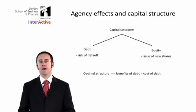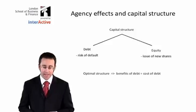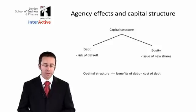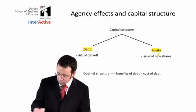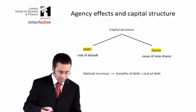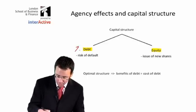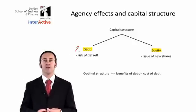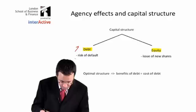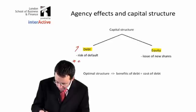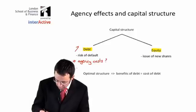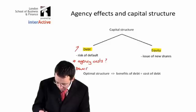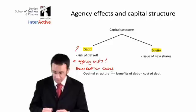The last theory on capital structure is looking at agency effects and capital structure. Your capital structure is made up of debt and equity. As you increase the debt, there is a risk of default. So if you have a risk of default, when looking at the agency effects — what then are the agency costs? Well, we've just mentioned that: looking at your bankruptcy costs. The more debt you take on board, the higher the risk of bankruptcy.